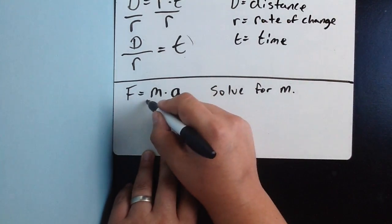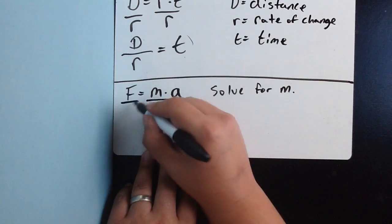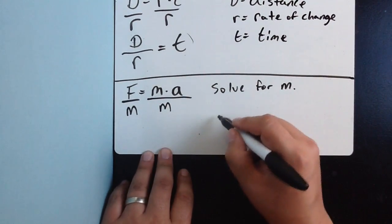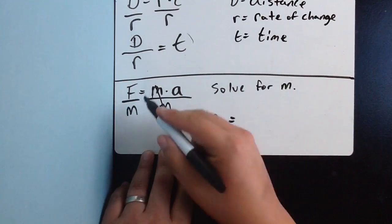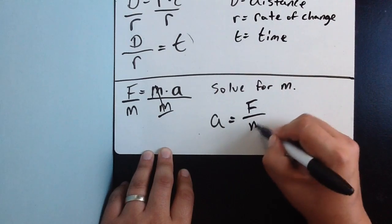So, solve for m. Since I'm multiplying mass times acceleration, I divide both sides by m. And I'm left with, and I'm going to sort of rewrite this as a is equal to,